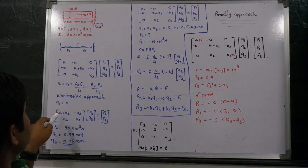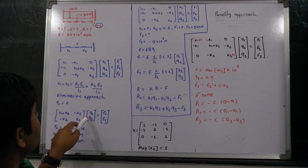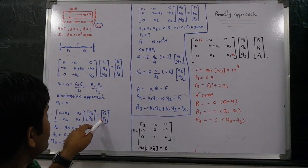After eliminating the first row and the first column, the matrix remaining is k1 plus k2 minus k2, minus k2 k2, q2 q3 equals f2 and f3.